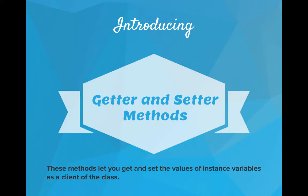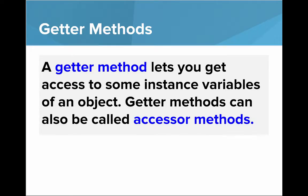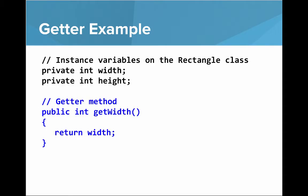These methods let you get and set the values of instance variables as a client of the class. A getter method lets you get access to some instance variable of an object. Getter methods can also be called accessor methods. Here I have a small example: the rectangle class has private instance variables private int width and private int height. The getter method is called public int getWidth, and all it does is return width.